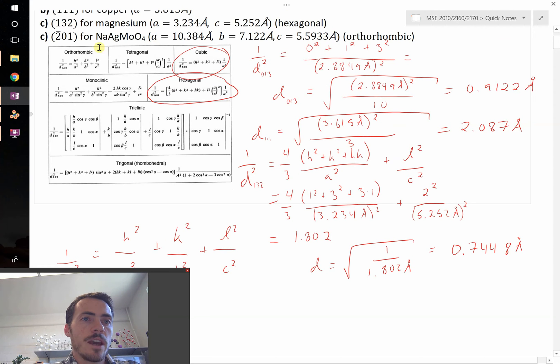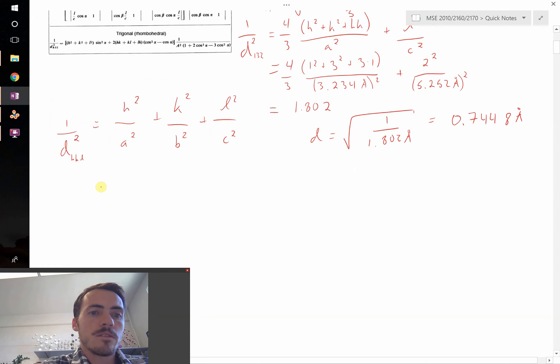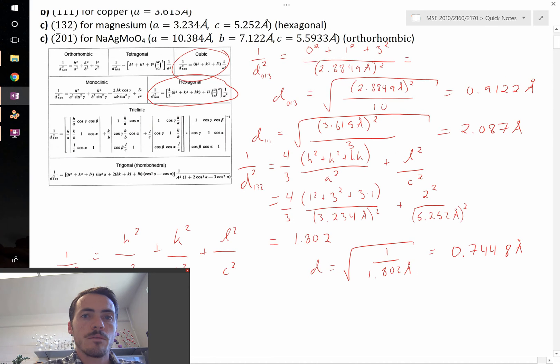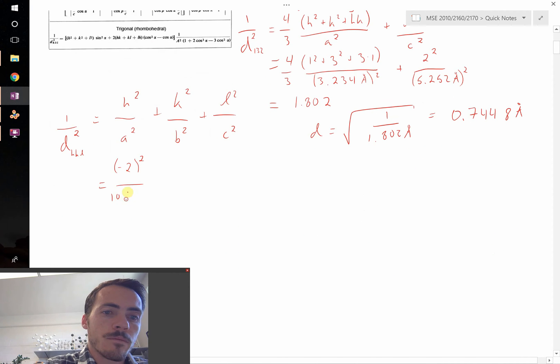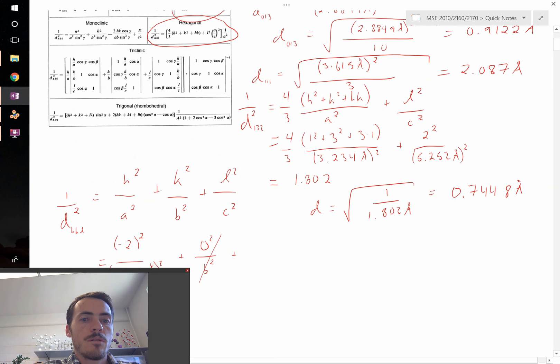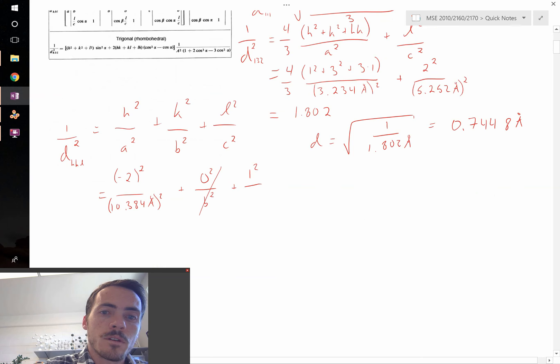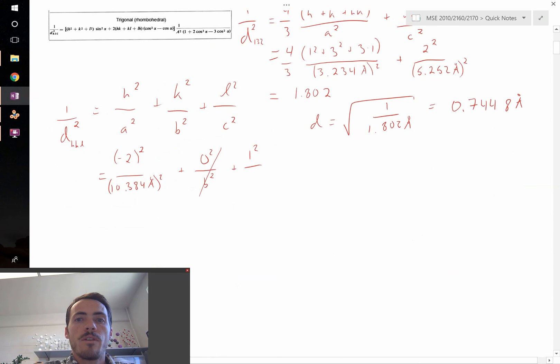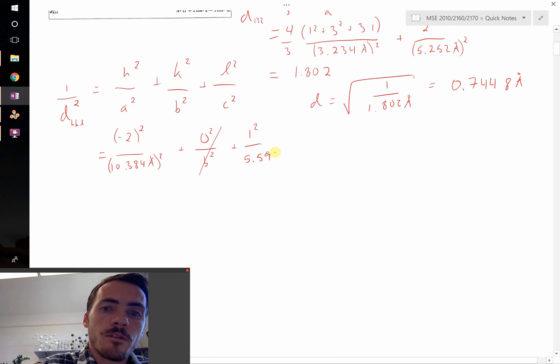We go ahead and plug these in. Since it's the 2, 0, 1, the 0 means that second term is going away. So we have 2 squared, that's 4, over A squared, which is 10.384 angstroms squared, plus 0 squared over B squared, which doesn't matter because it's nothing. And then L squared is 1, 1 squared, so it's just 1 over C squared, and C is 5.5933 angstroms squared.